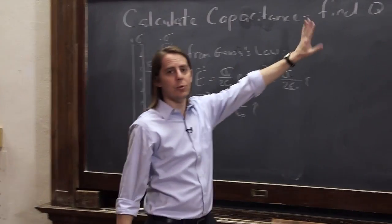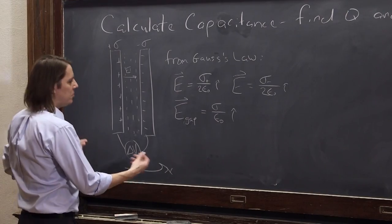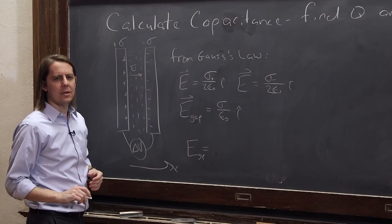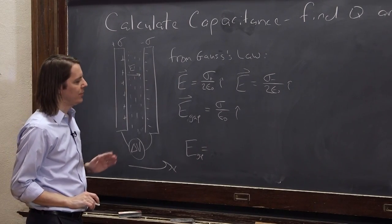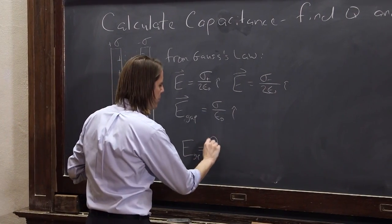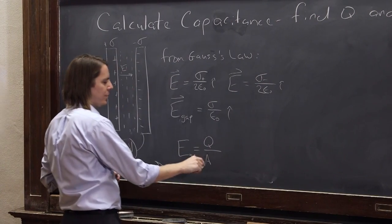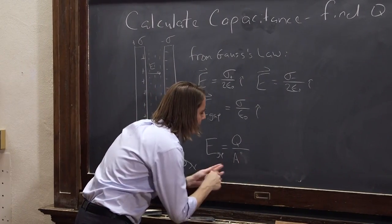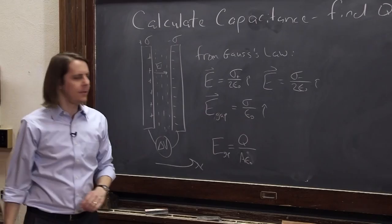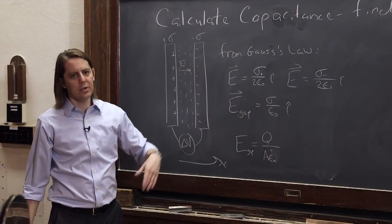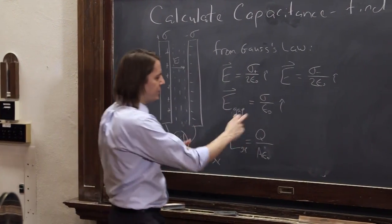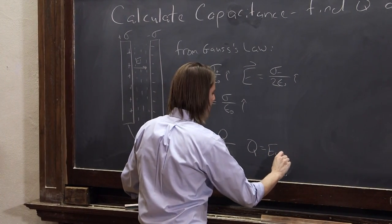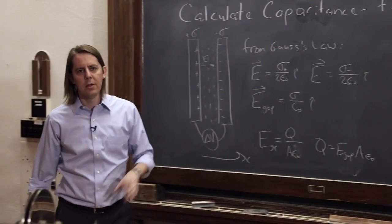E of the gap that we care about is just twice this, is sigma over epsilon naught in the i hat direction. Now we want it in terms of Q, the total charge. We also know the area of the plates. E, the electric field magnitude in the gap, and it's uniform in the gap, is Q over A, that's sigma, charge per unit area, epsilon naught. So the charge Q is the E field in the gap times A times epsilon naught.